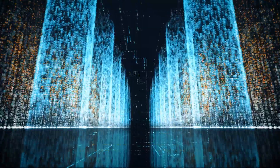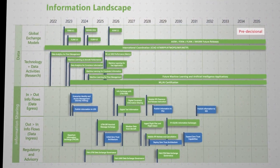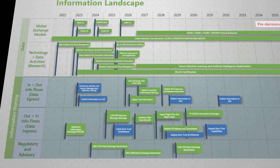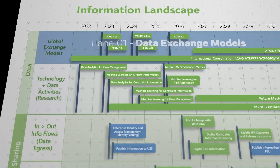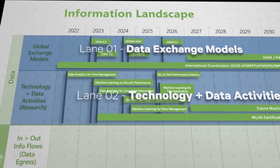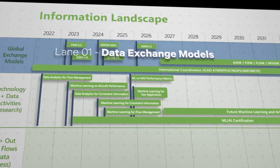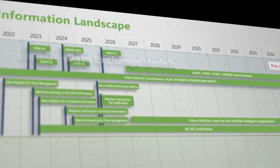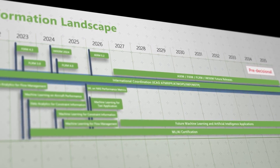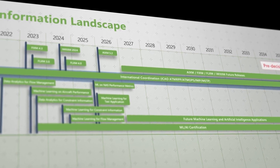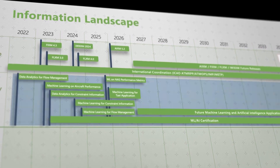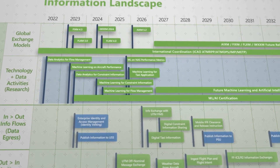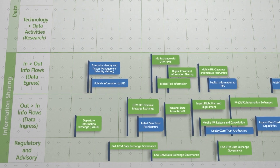The Information Landscape lays out the activities intended to standardize and share information throughout the future NAS. It is broken into two components, with one side dedicated to data and the other to information sharing. Within the data side, items are broken out into two lanes: data exchange models and technology plus data activities. Data exchange models are critical enablers for the future of the NAS, as they promote interoperability and allow systems and actors to readily exchange information. Activities covered under this section also include the international coordination required to provide governance and development for exchange models and international concepts. The use of emerging technologies will also provide the FAA with tools to better manipulate, use and analyze the data. As the NAS matures, better use of data will allow the FAA to improve predictions used to make decisions in operations.